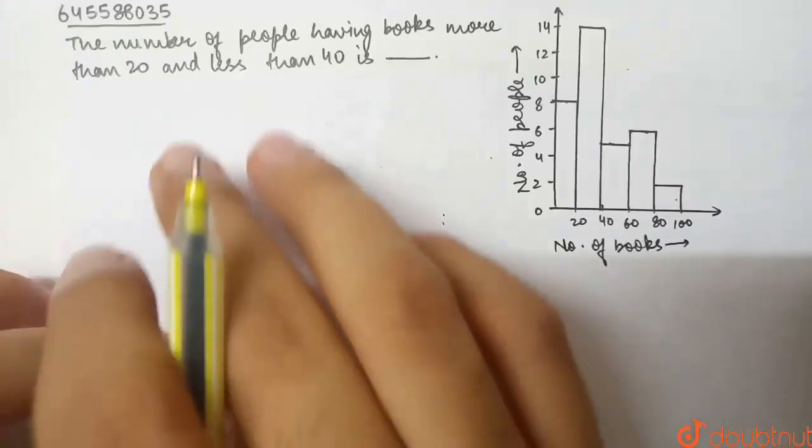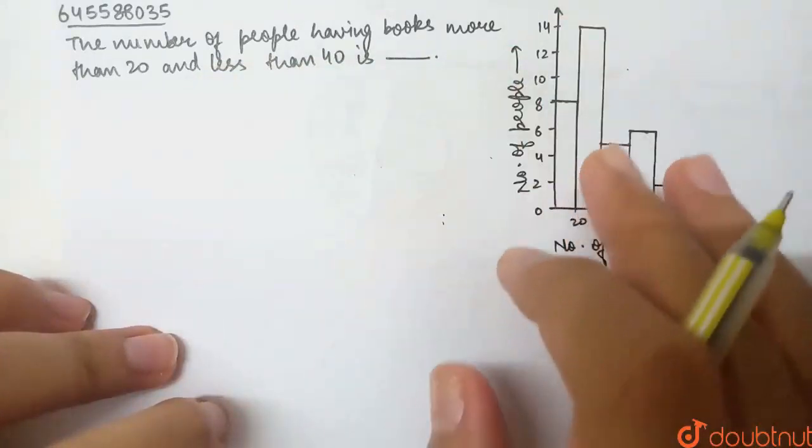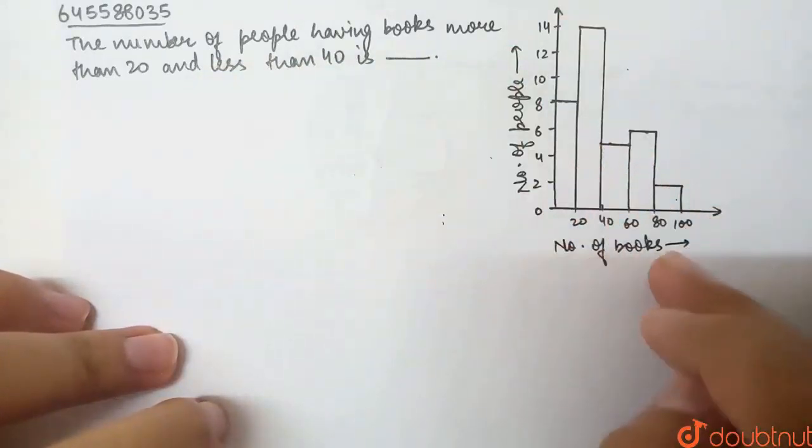This question is: the number of people having books more than 20 and less than 40 is. So, I have a histogram available here. The number of books has made our classes.